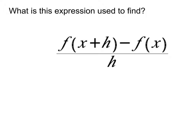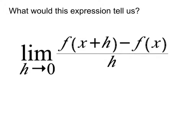This expression should be familiar to us — it's called the difference quotient, and it's used to find the slope of a secant line to the curve. The secant line goes through two points on the curve. Now, combining our difference quotient work with what we've been doing the last week or two, what would the limit as h approaches zero of the difference quotient actually tell us?